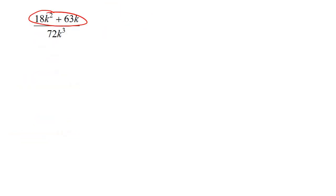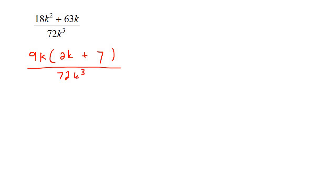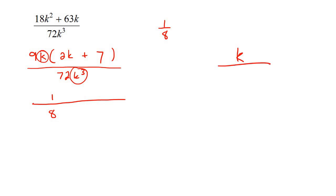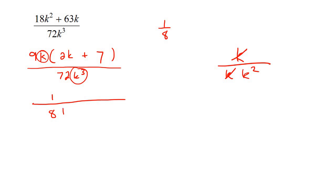In this example, take out a common factor at the top. The number 9 is the largest that divides into both terms, and you can also take out a k, leaving 9k(2k + 7). At the bottom, dividing the coefficient gives 1 over 8. For the variable k over k³, using exponent rules that leaves k² in the denominator. So the most simplified form is (2k + 7) over 8k².